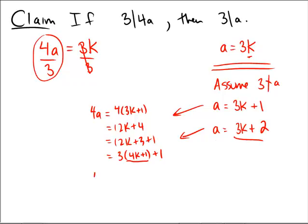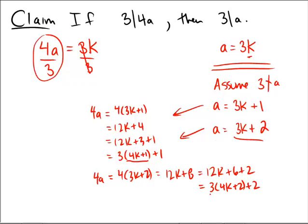And in the 3k plus 2 case, we'd be looking at 4a would be equal to 4 times 3k plus 2. But that's 12k plus 8. And what's that? That's 12k plus 6 plus 2. And then we can factor out a 3 again. And look at that. Again, we have 3 times something that looks like an integer, this time plus 2. So in both of these cases, we'd have 3 not dividing into 4a, and that would prove our claim by contrapositive.